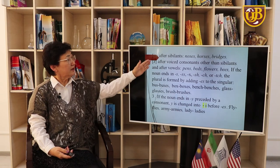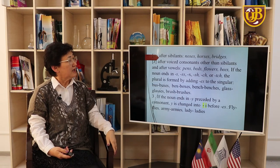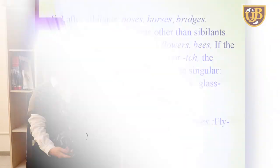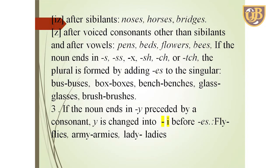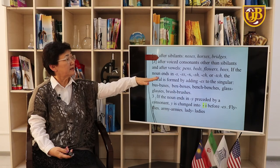We have several ways of pronouncing the ending -s. It is pronounced /ɪz/ after sibilants — noses, horses, bridges. It is pronounced /z/ after voiced consonants other than sibilants and after vowels — pens, bears, flowers, bees.